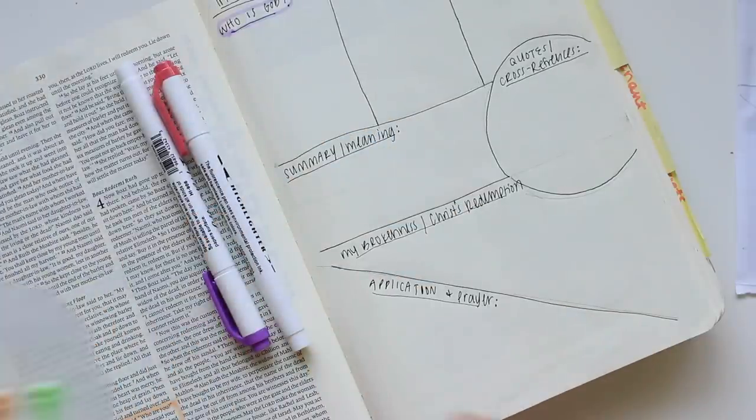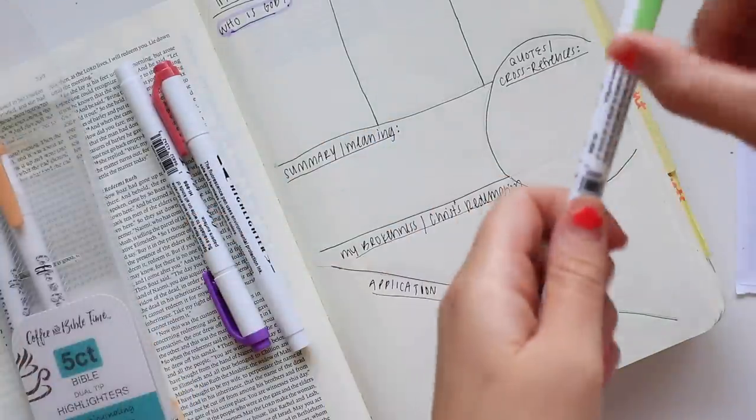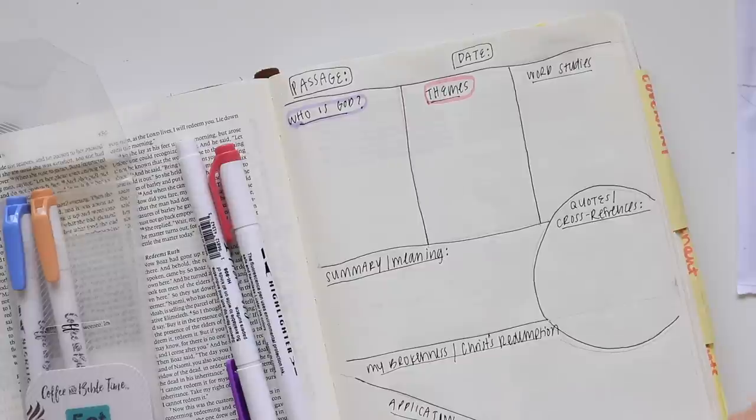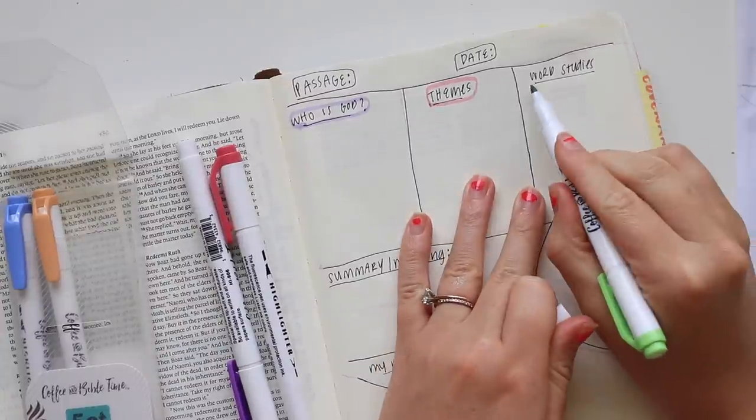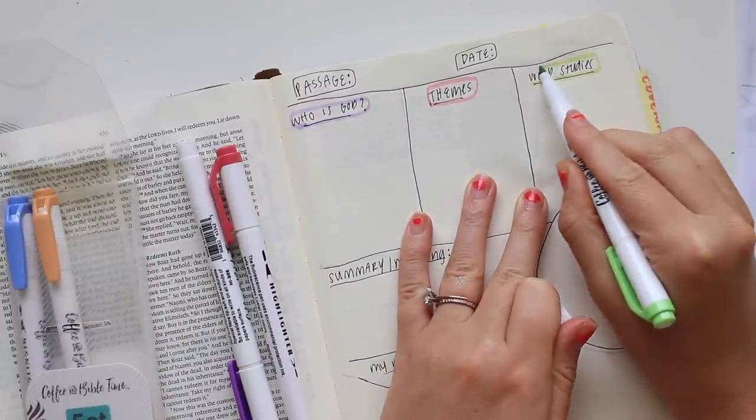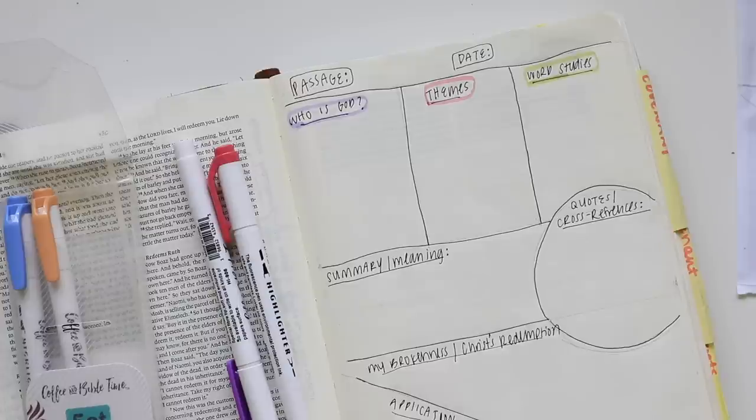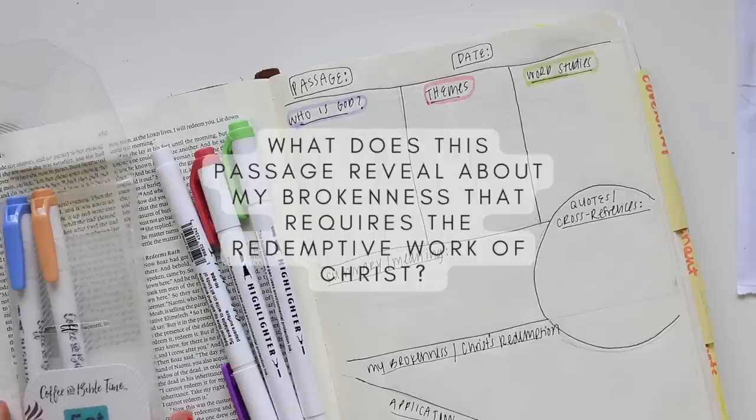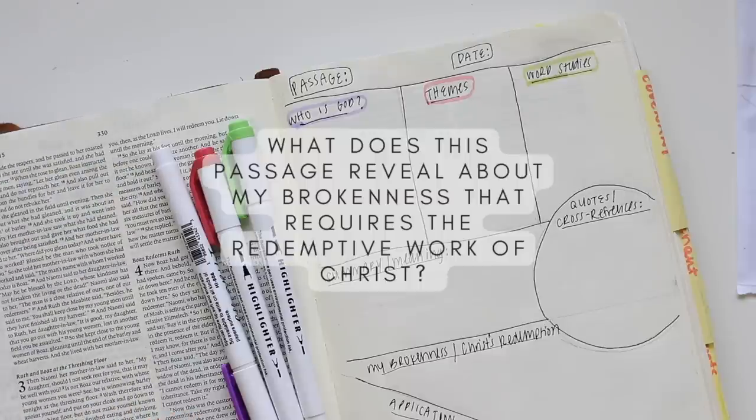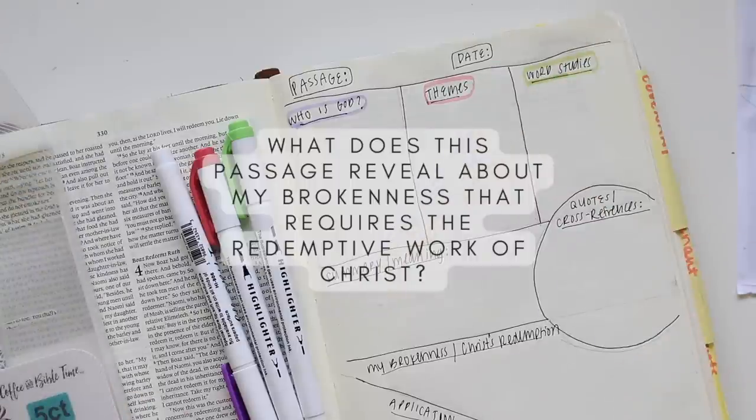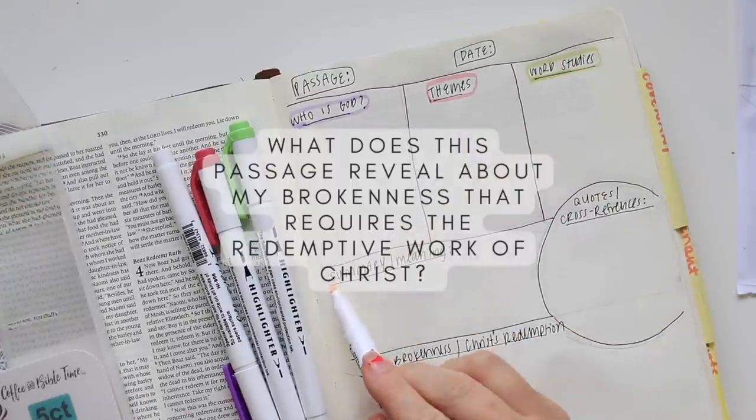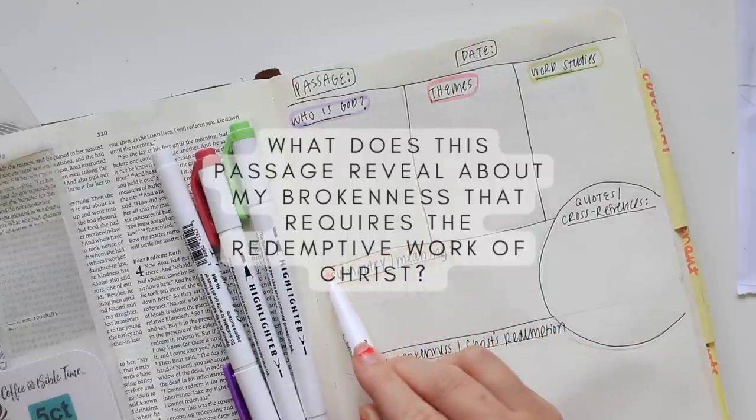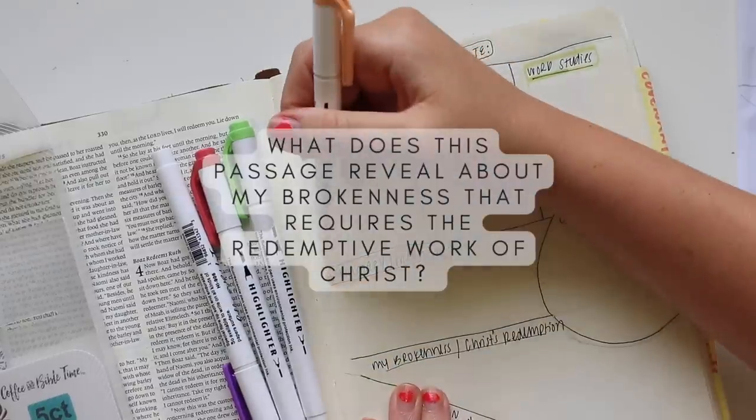The last two sections are kind of similar. The section down there says 'My brokenness, Christ's redemption.' I heard this quote once - I can't remember from who - but they said, 'What does this passage reveal about my spiritual brokenness that requires the redemptive work of Christ?'